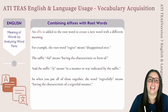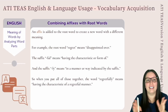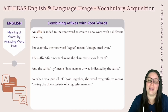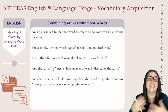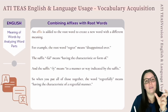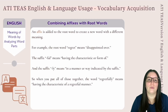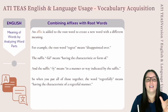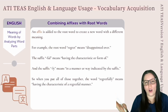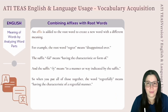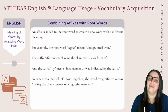Lastly, we're going to look at combining affixes with root words. Sometimes more than one affix will be added to a root word, creating a new word with a different meaning. When this happens, determine the meaning of each affix and combine those meanings. For example, the root word "regret" means disappointed over. The suffix "-ful" means having the characteristic or form of, and the suffix "-ly" means in a manner indicated by the suffix. So "regretfully" means having the characteristic of a regretful manner.